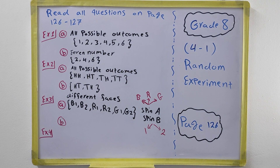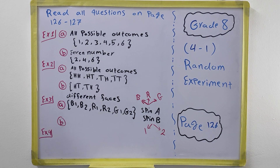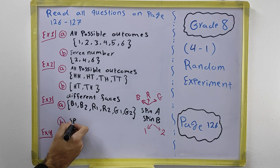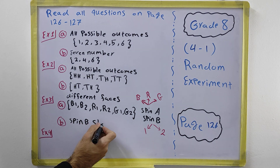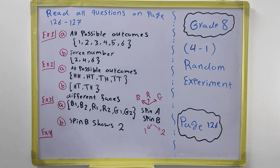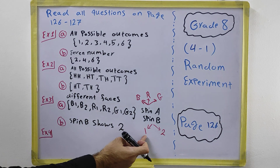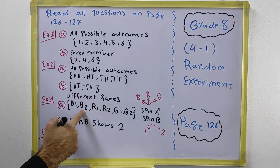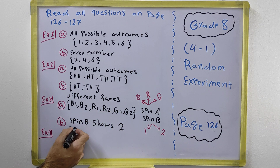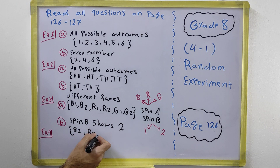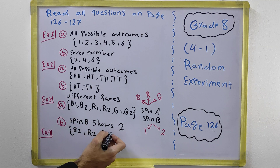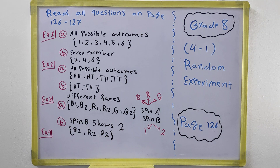Part B asks you to write the outcomes that satisfy the event that Spinner B shows two. It means we do not count those which have one — only those which have two. So the outcomes where Spinner B shows two are: blue-two, red-two, and green-two — B2, R2, G2.